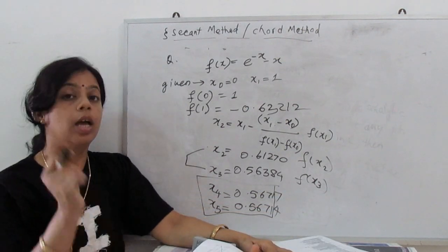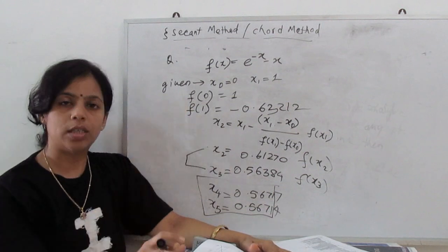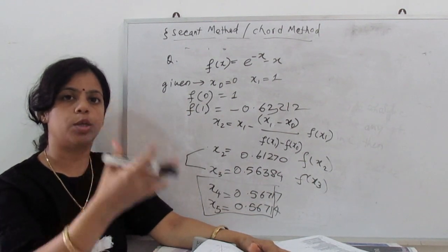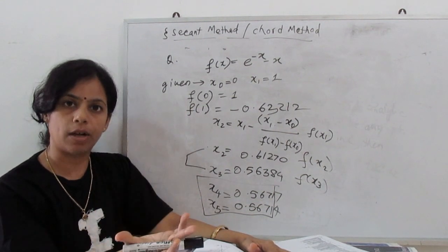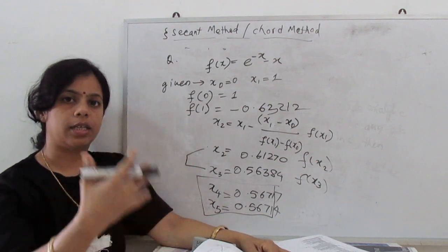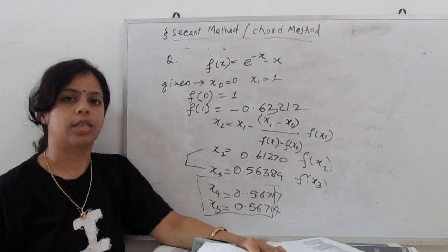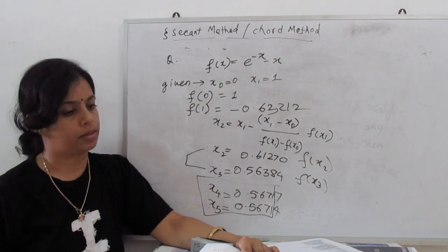The secant method is similar to previous methods. You begin with two initial values, substitute them and the function values into the formula, and iterate until the values converge. That's all for the secant method. Thank you very much.